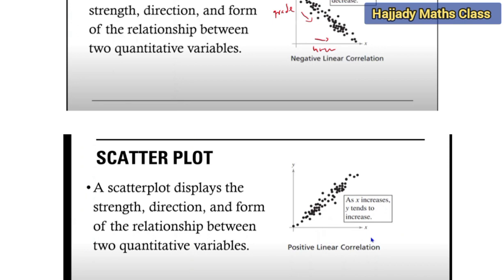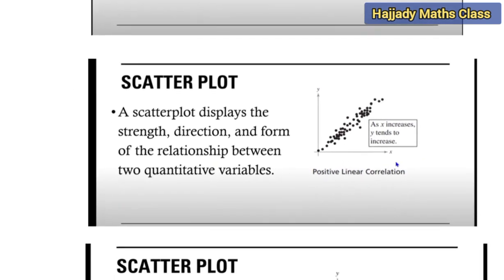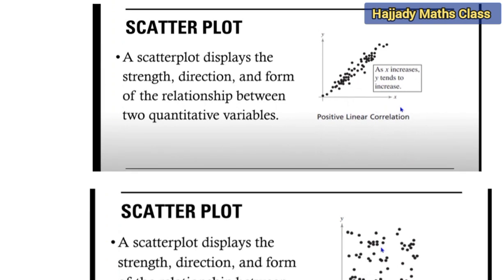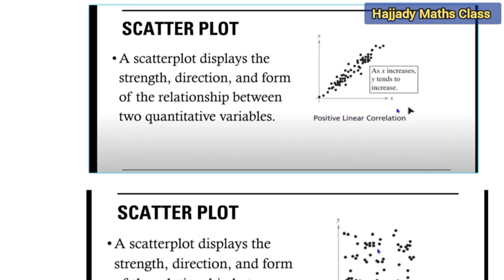And for a scatter plot, for a positive linear correlation, this shows that as x increases, y also increases. This shows an increment, an upward direction. So that means as the student increases the hours, the grade will also increase. That is one of the applications of positive correlation.